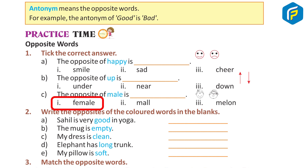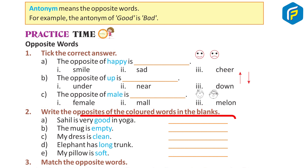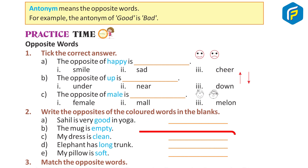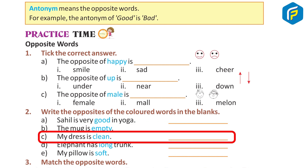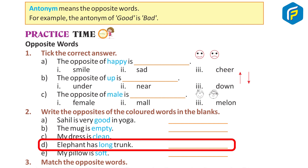Two: write the opposite of the colored words in the blank. A — Sahil is very good in yoga. Answer: bad. B — the mug is empty. Answer: full. C — my dress is clean. Answer: dirty. D — the elephant has a long trunk. Answer...